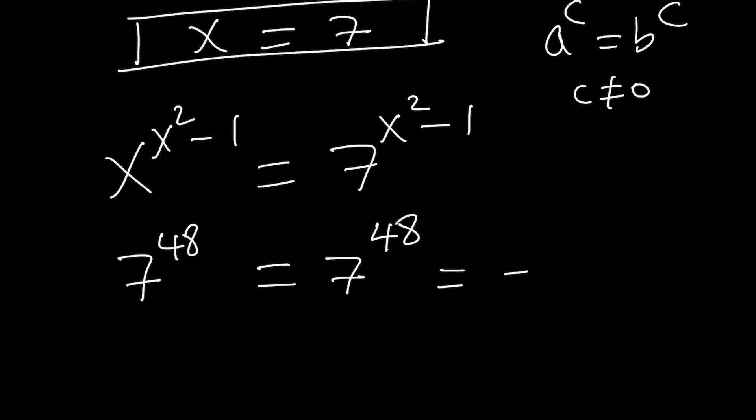How? Negative 7 to the power 48 is the same thing as 7 to the power 48. Why? Because 48th power will have a negative factor 48 times, so the product will be positive. The negatives are going to cancel out in pairs, so this is true. Which means x equals negative 7 is also a solution.